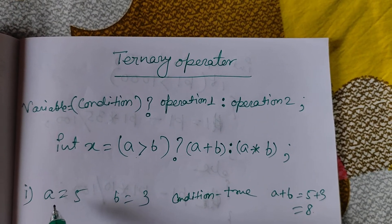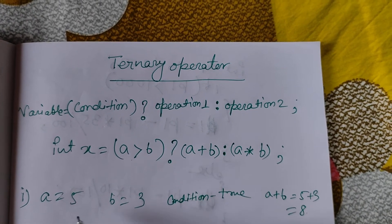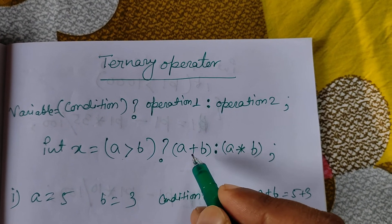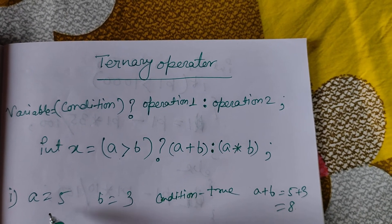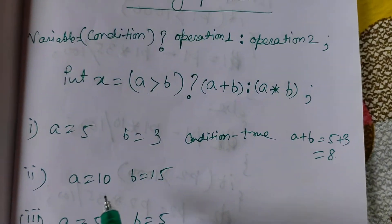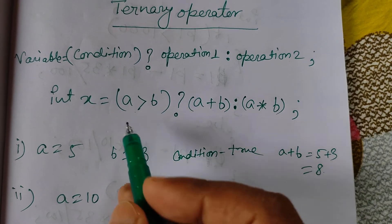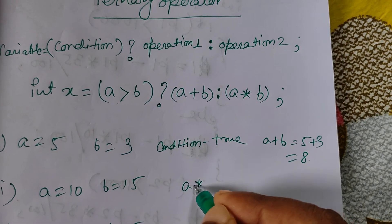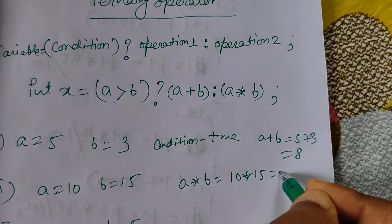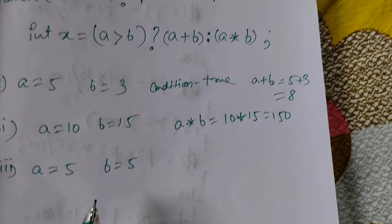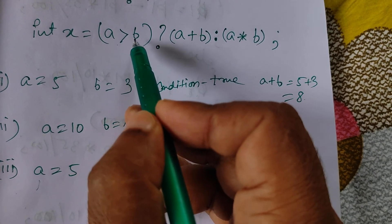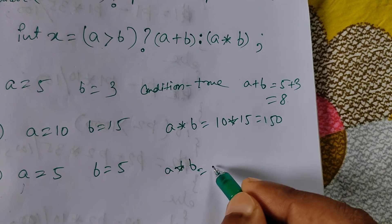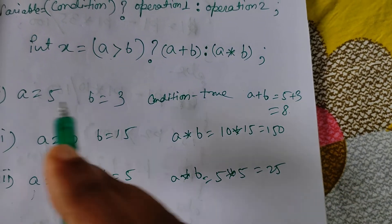Second case: if a = 10 and b = 15, then a > b is false, so a * b executes — 10 * 15 = 150, so x = 150. Third case: if a = 5 and b = 5, a > b is still false, so again a * b executes — 5 * 5 = 25, so x = 25.